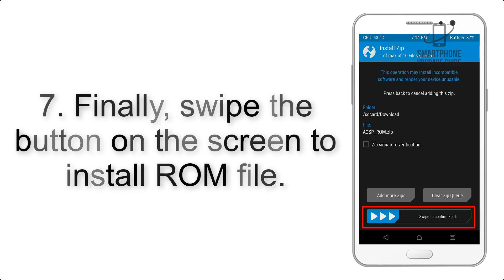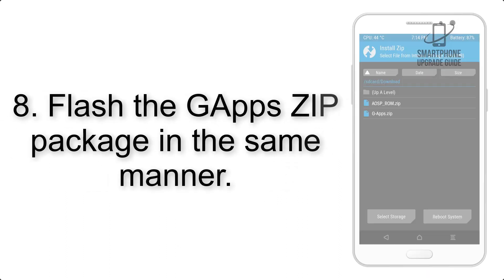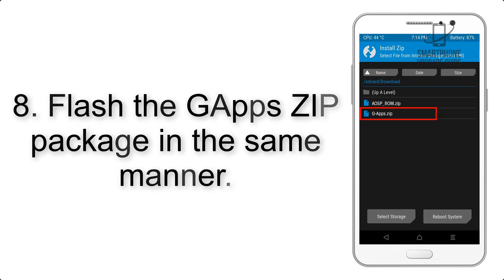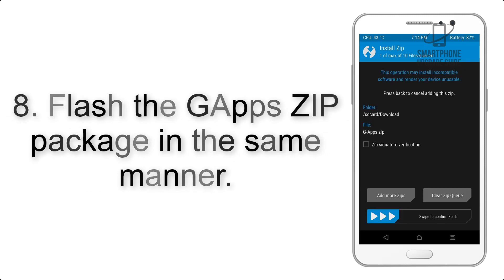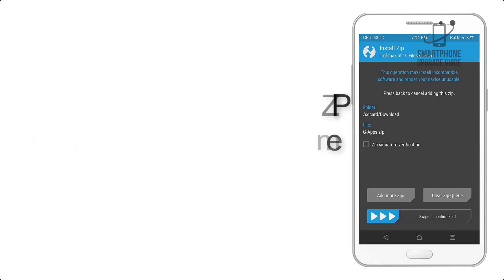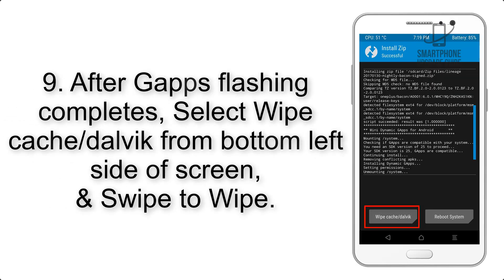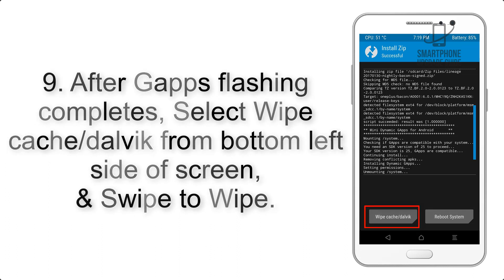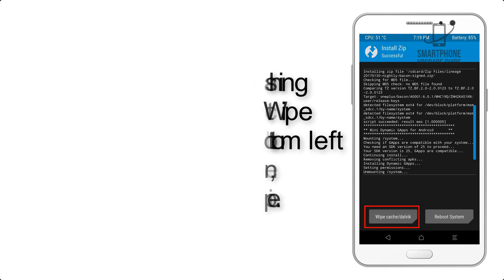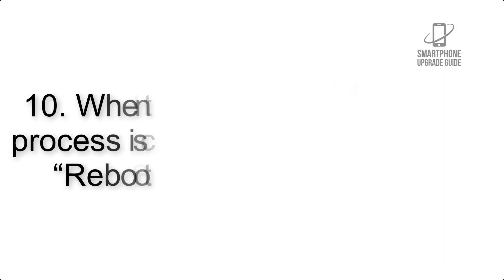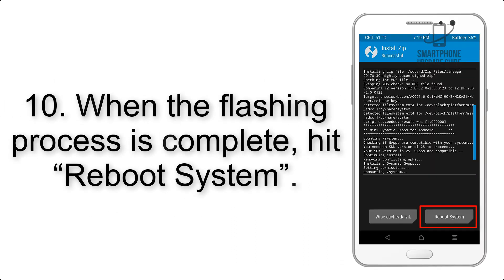Step 7: Swipe the button on the screen to install the ROM file. Step 8: Flash the GApps zip package in the same manner. Step 9: After GApps flashing completes, select Wipe Cache and Dalvik from the bottom left side of the screen and swipe to wipe.